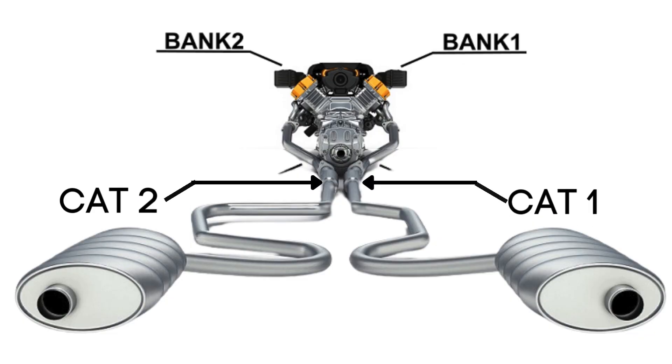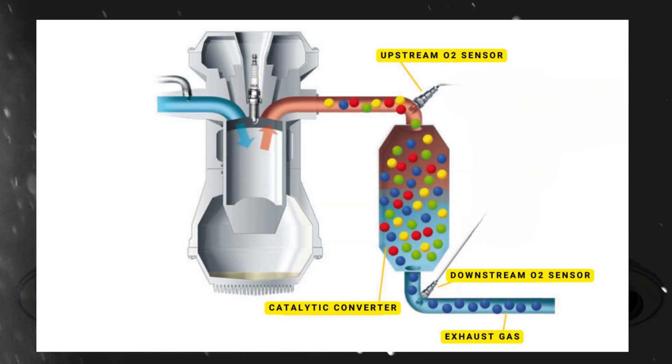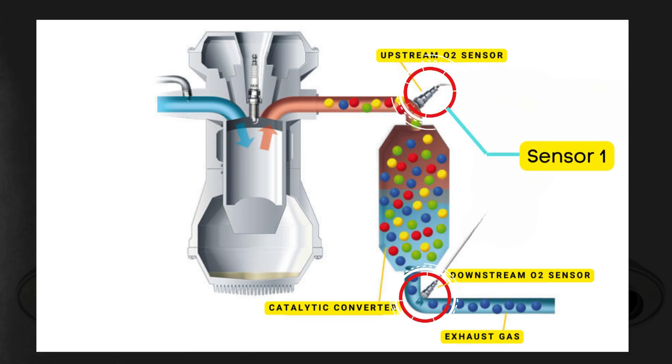Each bank has its own exhaust line and each exhaust line is equipped with two catalytic converters. Now, here's where the oxygen sensors come in. Each catalytic converter has two oxygen sensors, an upstream sensor, which we call Sensor 1, and a downstream sensor, known as Sensor 2.